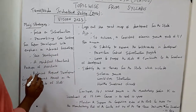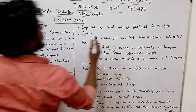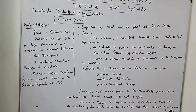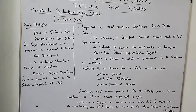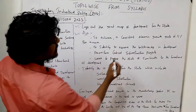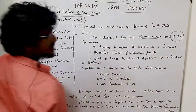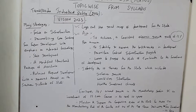The Vision 2023 lays down the road map of development for the state. The aim is to achieve a consistent economic growth rate of 11% per annum. That's why we will target a growth of 11% in a year.